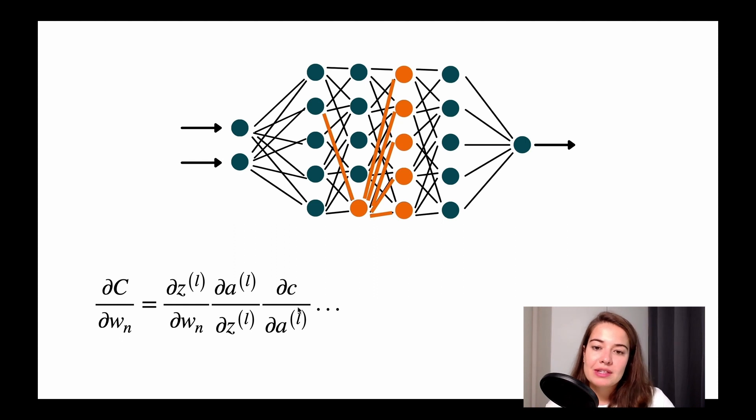So what happens is, if your network is not stable, while you're trying to predict, while trying to understand how this weight affects the output and change it accordingly, you're going to have to multiply a lot of the values, a lot of the derivatives of these numbers, of these weights and biases, to be able to come up with this value, the partial derivative of your weight according to the cost.